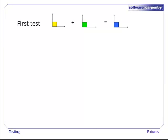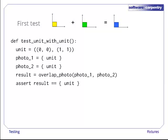Here's our first test: a photo containing only the unit square compared with itself. The output should be just the unit square, and here's how we turn that test into code. Six lines of code, that's not too bad.